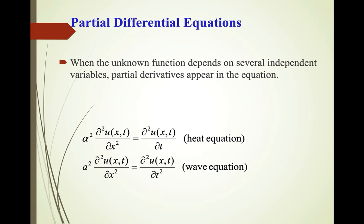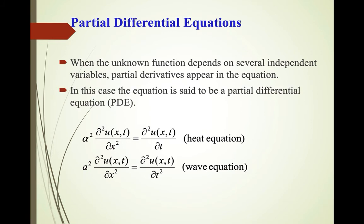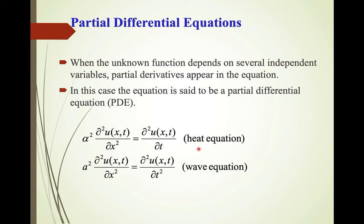What is a PDE? When the unknown function depends on several independent variables — meaning more than one independent variable — partial derivatives appear in the equation. In this case, the equation is said to be a partial differential equation, also known as a PDE. Examples include the heat equation and the wave equation. PDEs typically contain partial derivatives indicated by the partial derivative symbol.